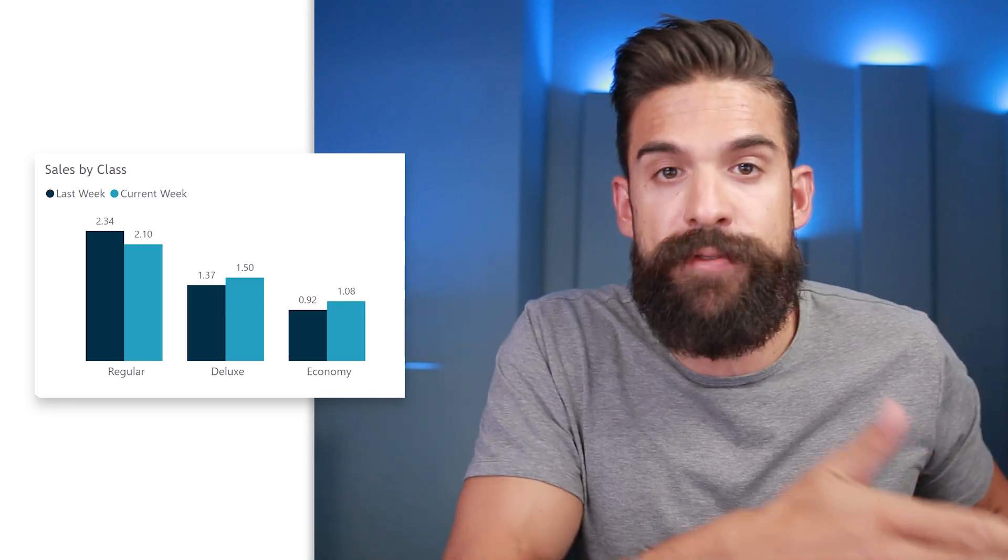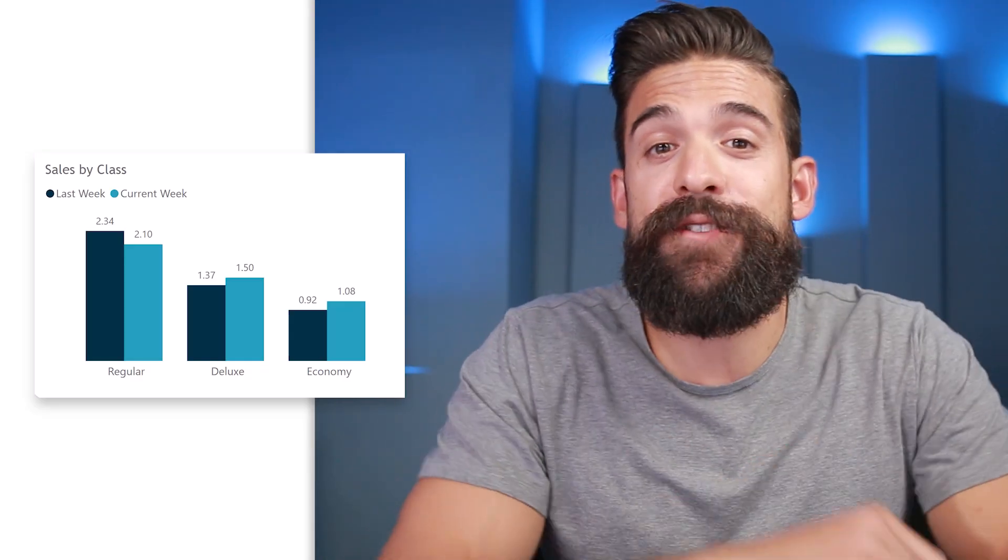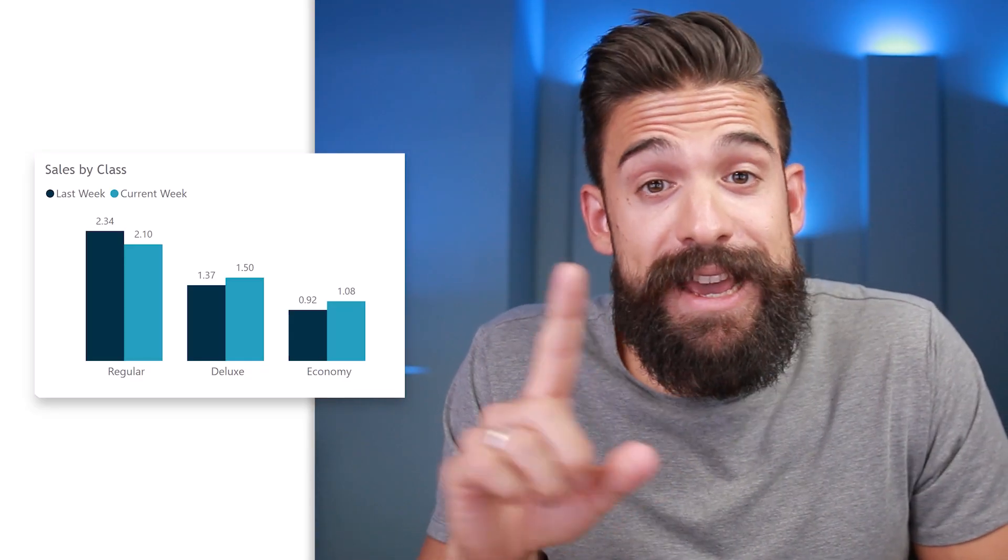In this chart we are comparing the total sales for different product classes — regular, deluxe, and economy. The light blue bars are for the current week sales and the dark blue ones are for the previous week sales. Which week-over-week development for what product class is big enough that we should focus on it?